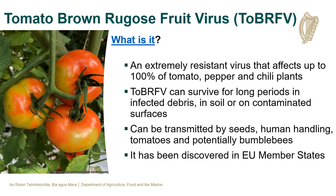Tomato Brown Rugose Fruit Virus is an extremely resistant virus that affects up to 100% of tomato, pepper and chilli plants. This virus can survive for long periods in infected debris, in soil or on contaminated surfaces. It can be transmitted within seeds, by human handling on tomatoes, and potentially by bumblebees. Tomato Brown Rugose Fruit Virus has been discovered in EU Member States.